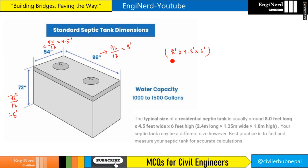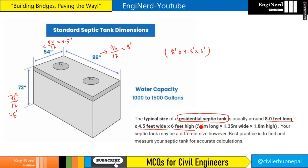The typical size of a residential septic tank is usually around 8 feet long, 4.5 feet wide, and 6 feet high. In the metric system, that is 2.4 meters long, 1.35 meters wide, and 1.8 meters high.